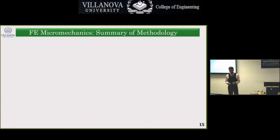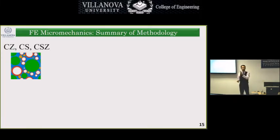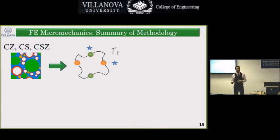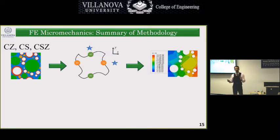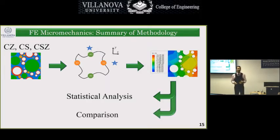That covers the experimental part of the work. It's time to create finite element simulations of these microstructures and investigate their micromechanics in more detail. We'll start by creating representative volume elements (RVEs) of the three composite types, apply different boundary conditions on them, and measure elastic modulus, shear modulus, thermal conductivity, and CTE. We then perform statistical analysis and compare results to experimental findings and predictions of different schemes.